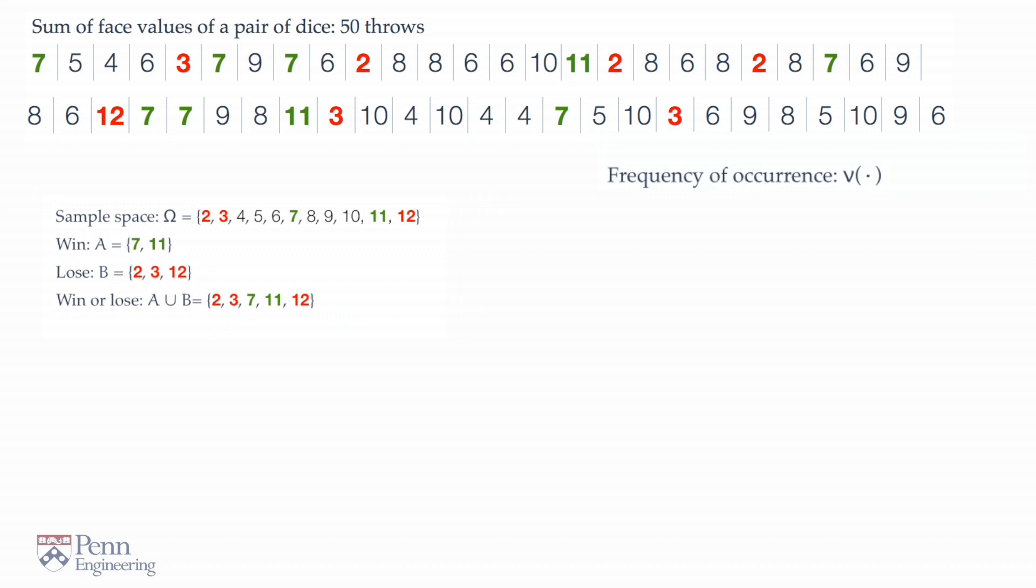Now, let's begin with the sample space itself. Well, every time one rolls a pair of dice, one gets a number from 2 to 12. And therefore, in 50 performances of this experiment, the sample space occurs every single time. And therefore, the frequency of times the sample space occurred is 50 divided by 50, or 1. The sample space is certain.